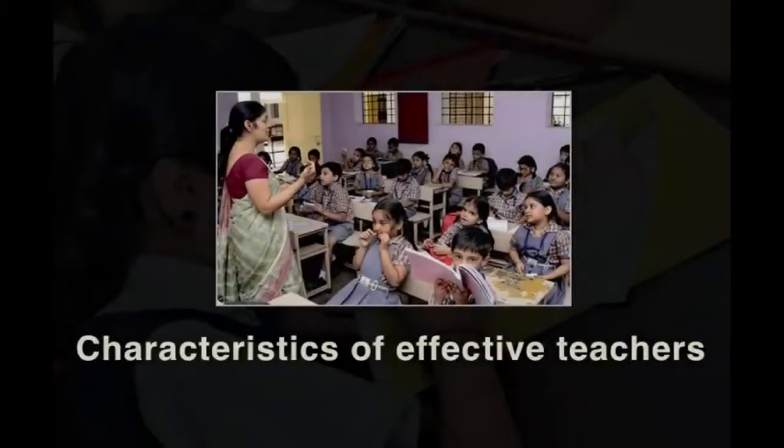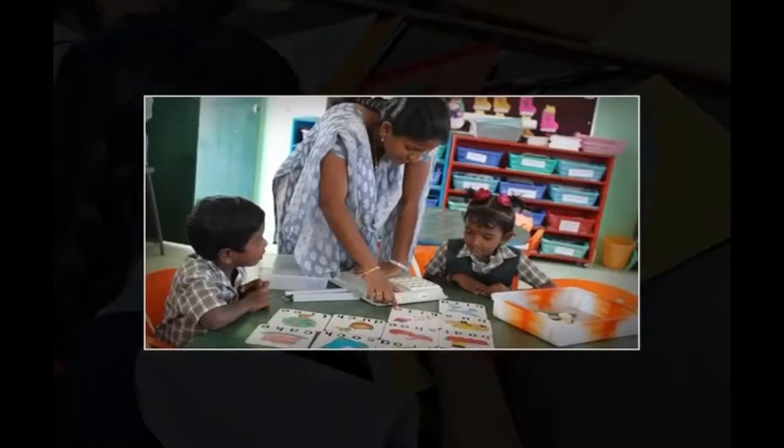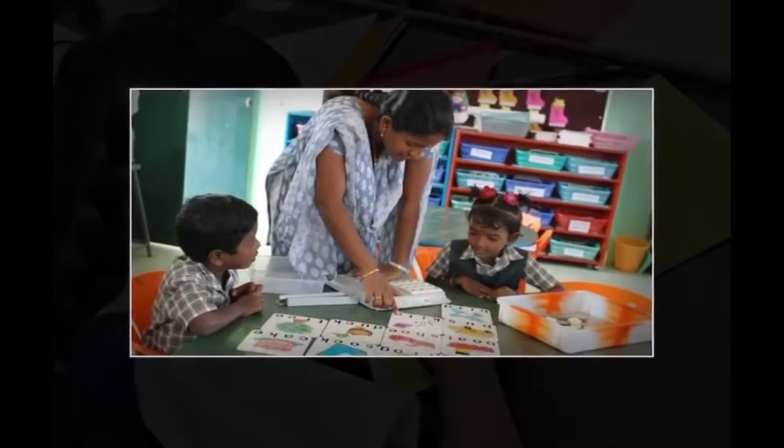Now let us see the characteristics of effective teachers. Effective teachers know their children well and care about the whole child. They need to know the abilities of each child, what interests the child, how best they learn, how they respond to praise and criticism, and how to get the best out of each child. Teachers should also be confident in the classroom — confidence comes with experience, but it is important not to be so confident that children think the teacher knows all the answers.